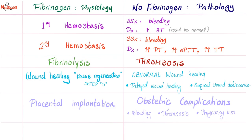Fibrinogen physiology versus pathology: fibrinogen plays a role in primary hemostasis, so fibrinogen pathology causes bleeding and bleeding time could be prolonged or normal. For secondary hemostasis, no fibrinogen means bleeding, prolonged PT, PTT, and TT (thrombin time). For fibrinolysis, loss of fibrinogen means thrombosis. Regarding wound healing and tissue regeneration (step five of hemostasis), pathology causes abnormal wound healing, delayed wound healing, and surgical wound dehiscence. Function in placental implantation: no fibrinogen means obstetric complications — bleeding, thrombosis, or pregnancy loss.